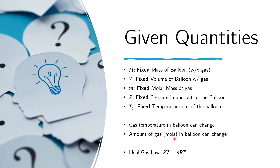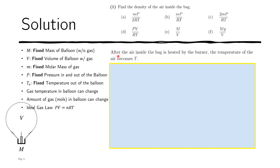Then we have the ideal gas law. When dealing with ideal gases, it is always useful to recall the form PV = NRT, where R is the universal gas constant, N is the number of moles, V is the volume of the gas, P is the pressure, and T is the absolute temperature. After the air inside the bag is heated by the burner, the temperature of the air becomes T. The problem asks us to find the density of the air inside the bag after the heating occurred.